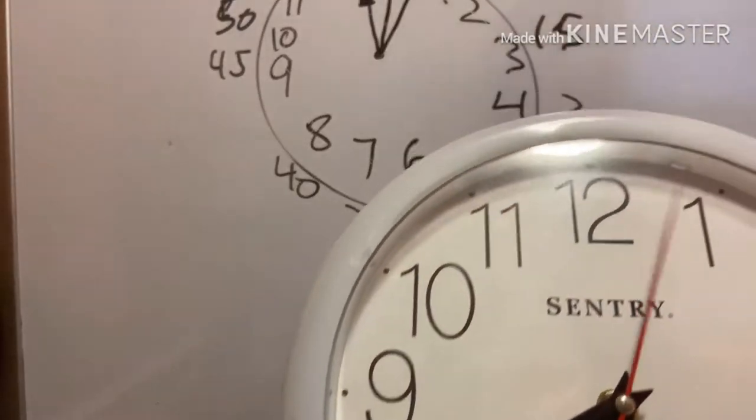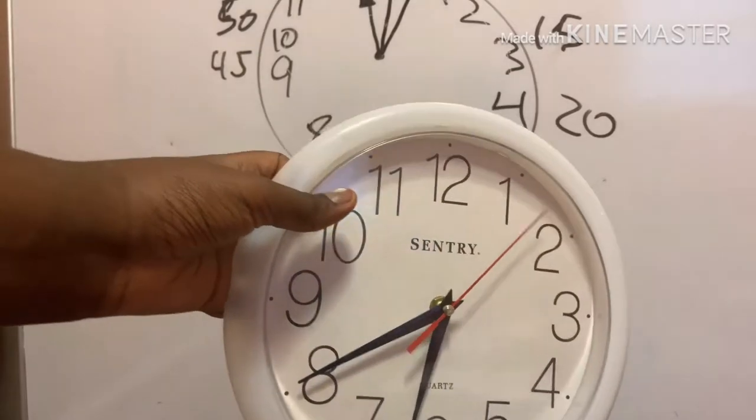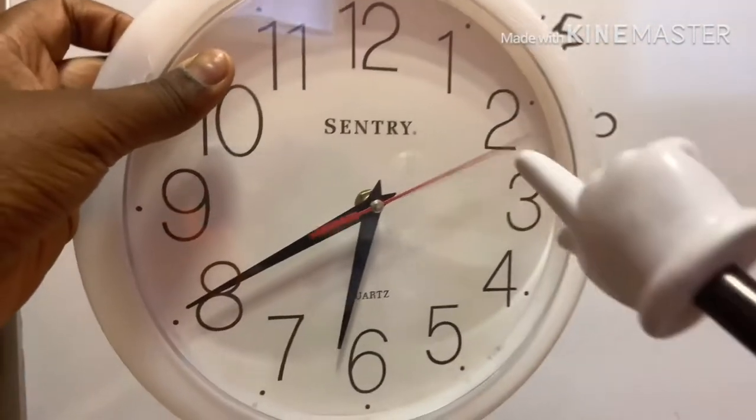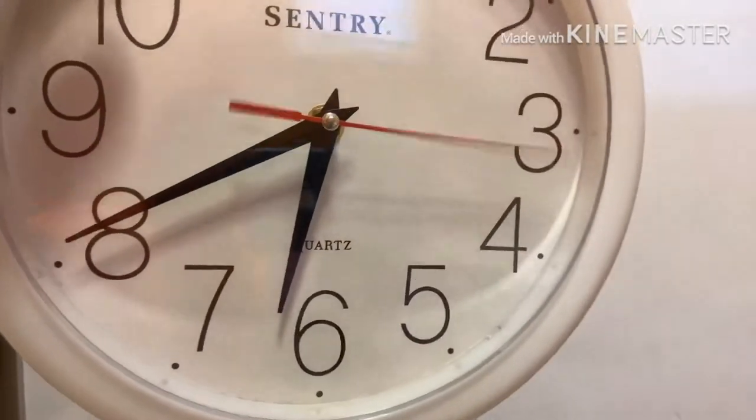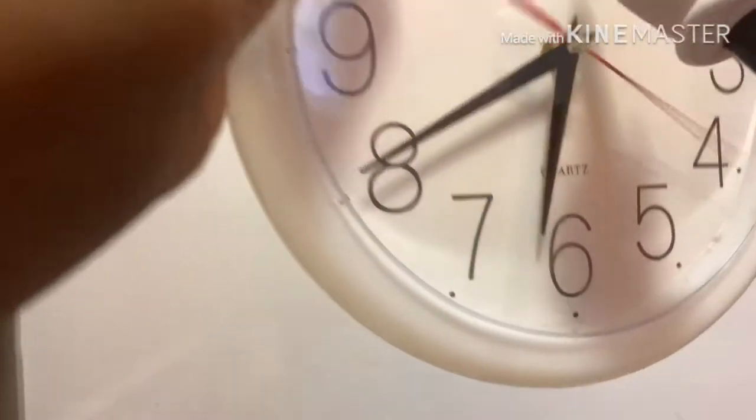This is how you can read it. You see this big red hand that keeps going tick, tick, tick, tick? That is the second hand. Yeah, the second hand that's constantly going one, two, three, four, five, and that's how you can count your seconds.